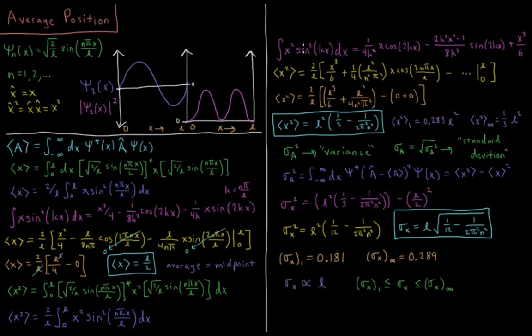Similarly, I look that up in an integrals table. I get 1 over 4k squared x cosine 2kx minus 2k squared x squared minus 1 over 8k cubed sine 2kx plus x cubed over 6. That's a lot of stuff. You can work your way through that algebra on your own if you like.